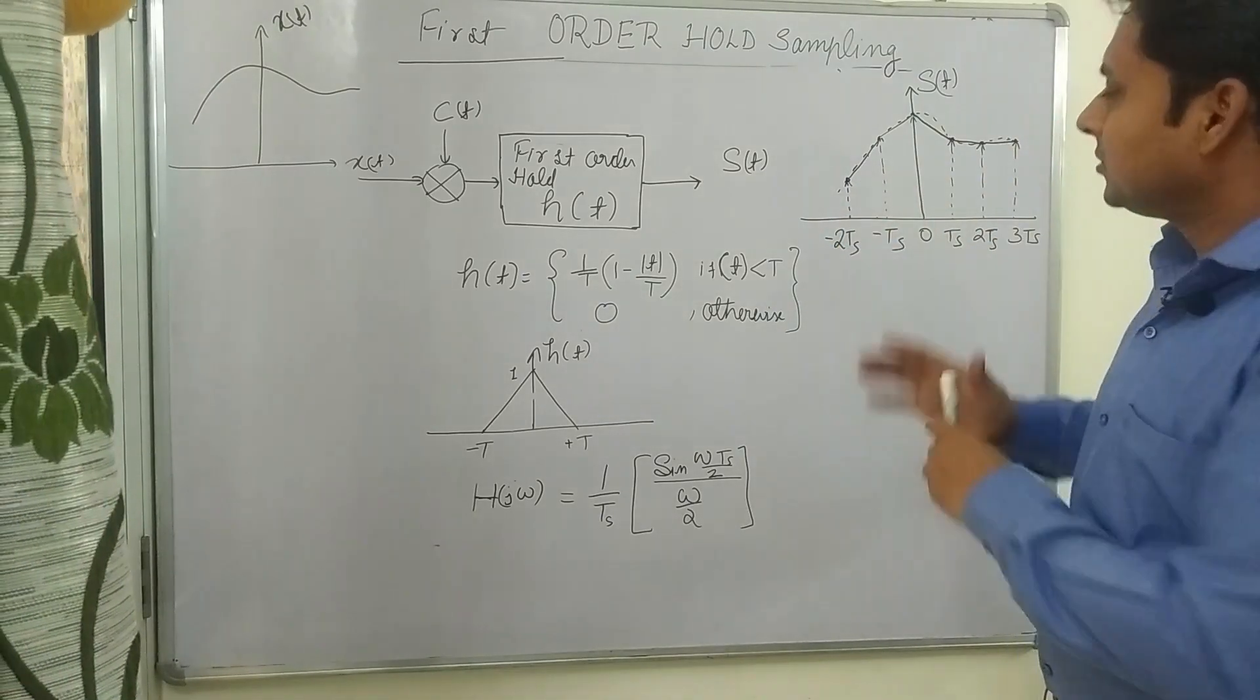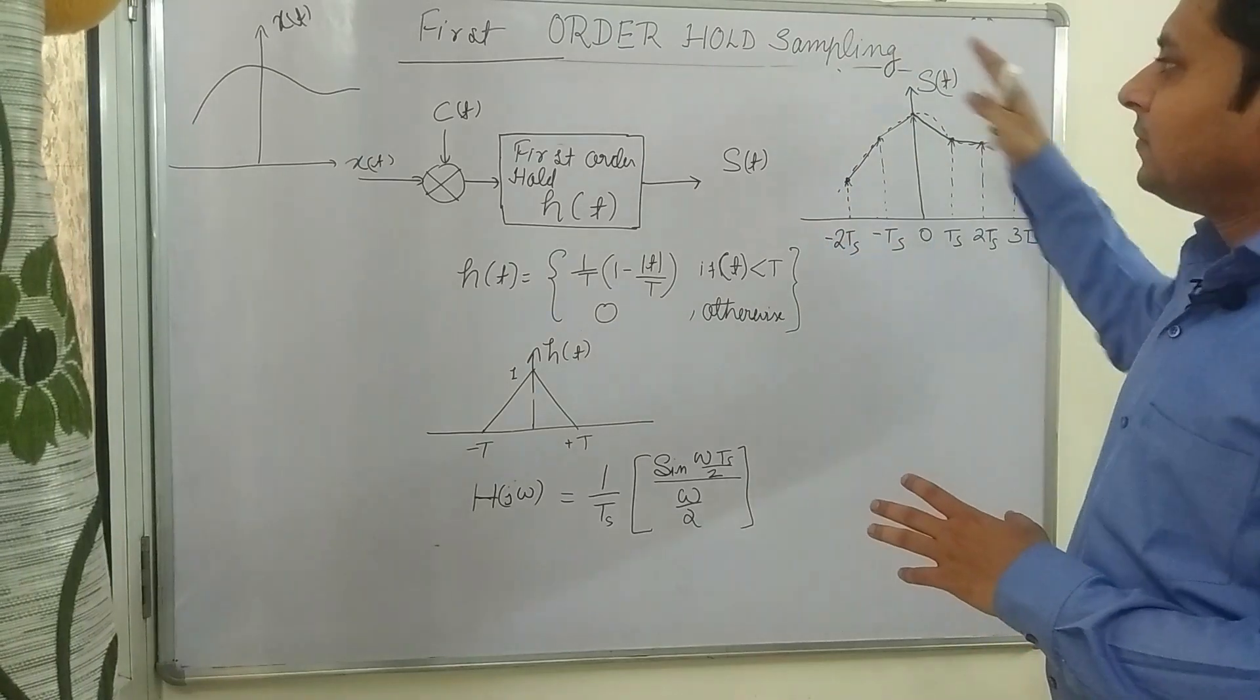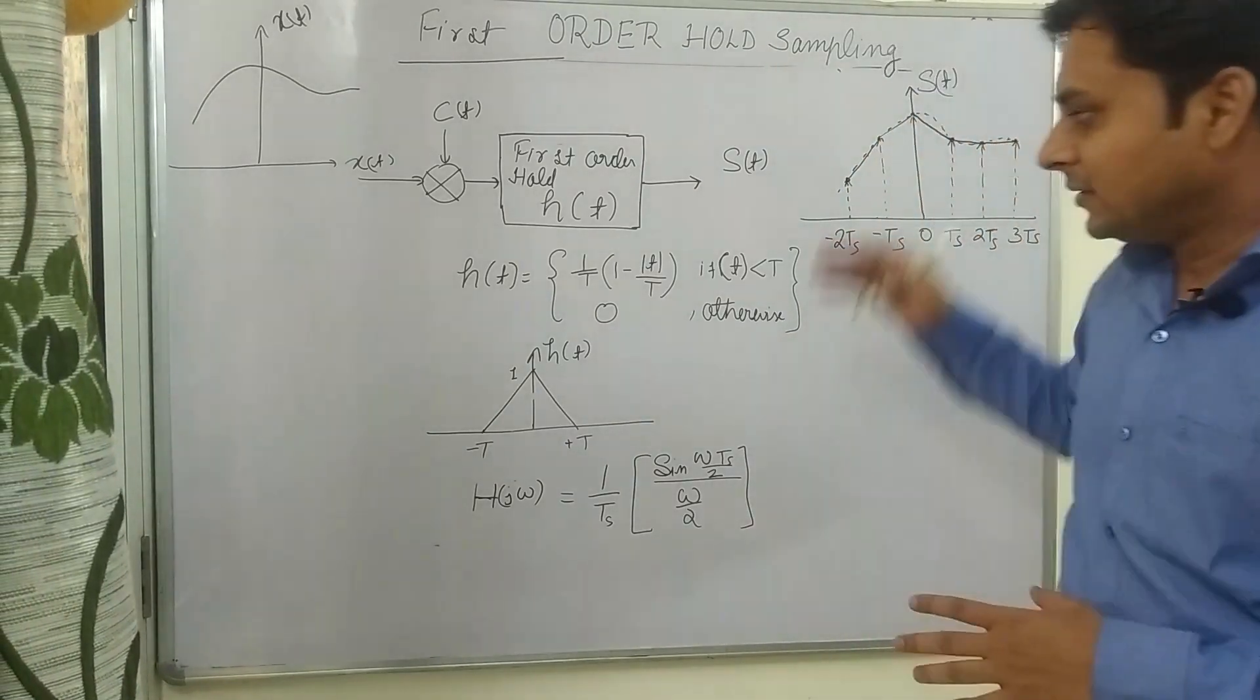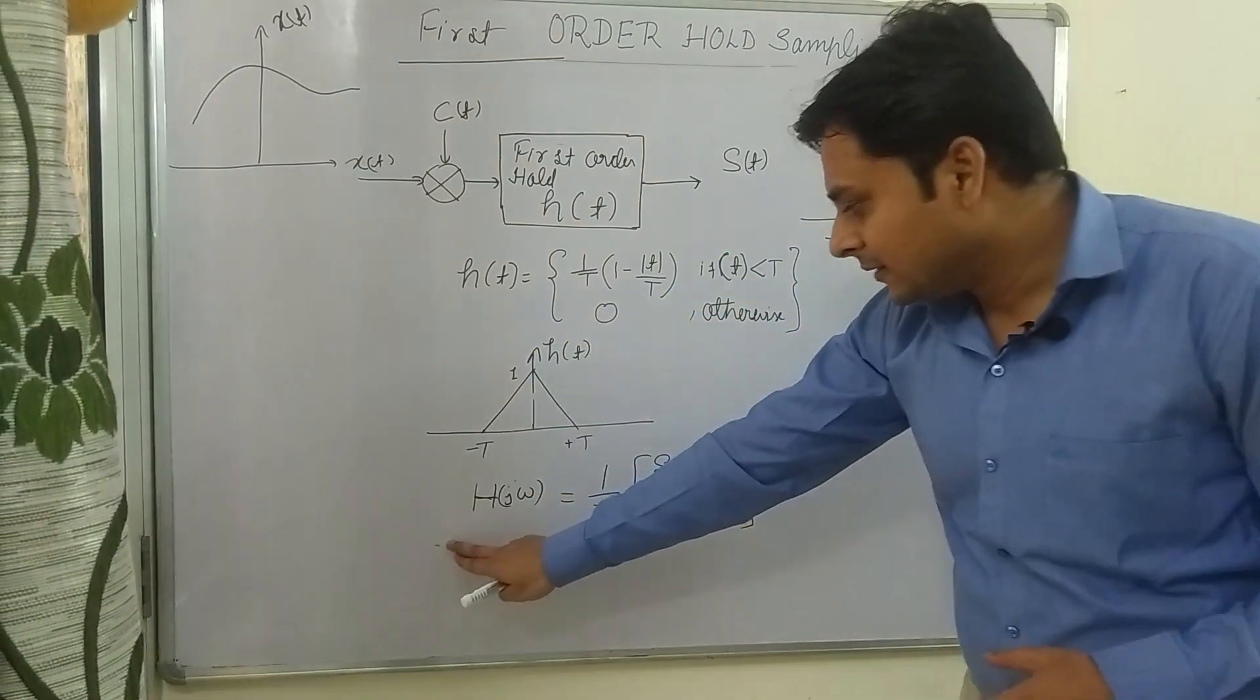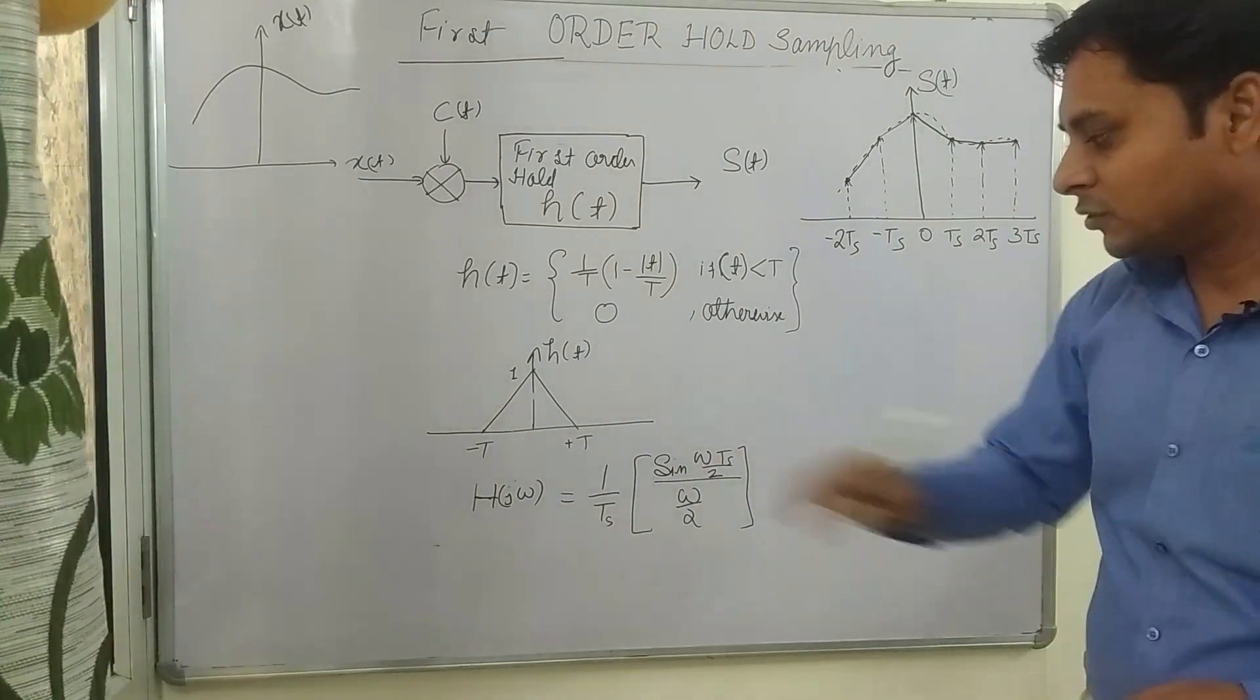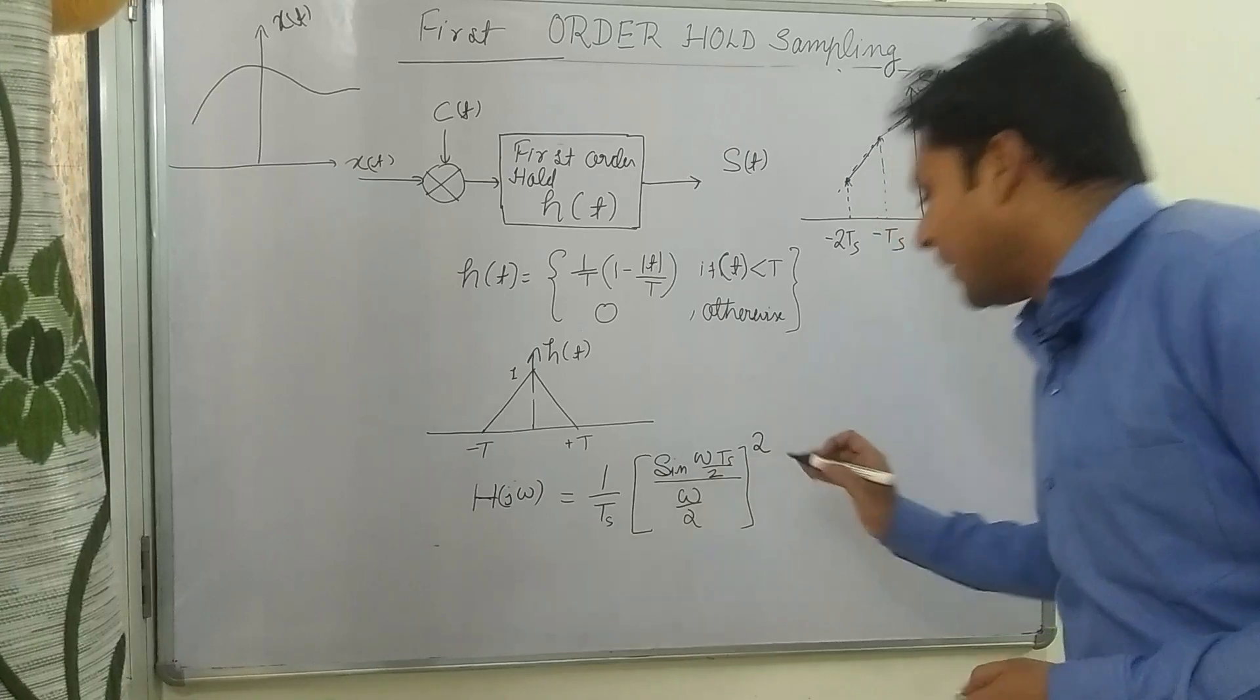we have reduced the distortion. We can see that the function of h(t) is a triangular function, and we can also represent it as H(jω) in frequency domain. H(jω) will be equal to (1/Ts) × (sin(ωTs/2) / (ω/2))².